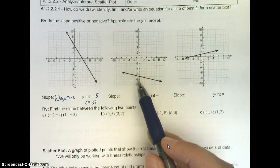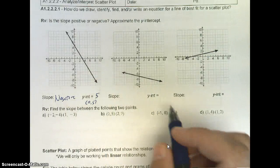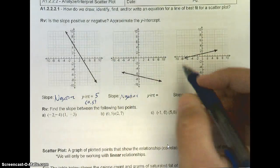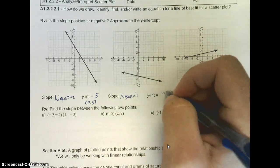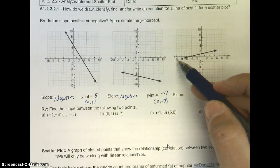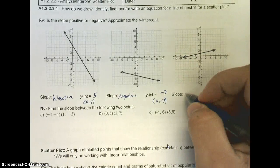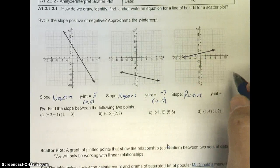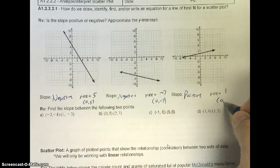Slope here — we're going down to the right again. It's not as steep, but it's still going down to the right, so that's still negative. As far as the y-intercept goes, right here, negative 7. So (0, -7). Lastly, it's rising up here, going up to the right — that's a positive slope. My y-intercept is hitting around 1, so my y-intercept is 1, point (0, 1).